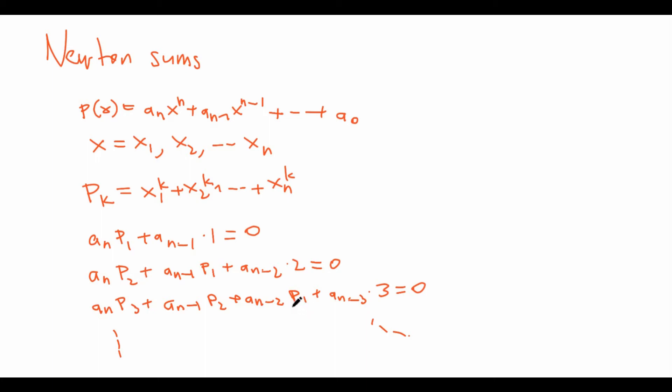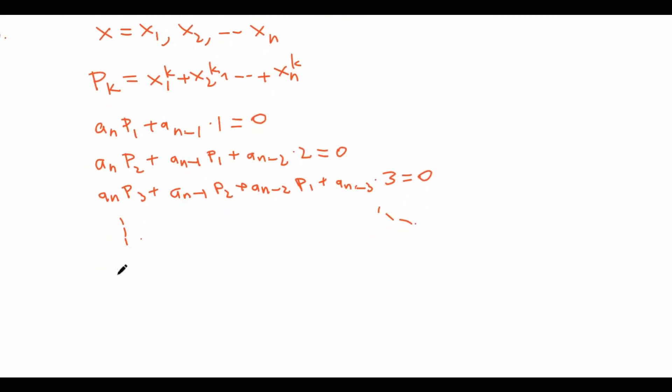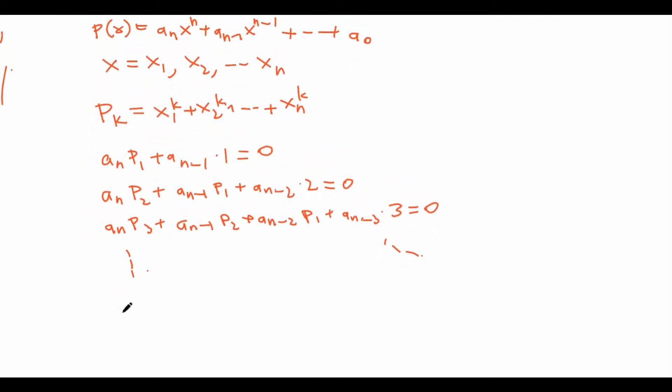So you might notice that this pattern works pretty well until we get to P_n. So now we have a_n*P_n plus a_{n-1}*P_{n-1} plus dot dot dot all the way to plus a_1*P_1 plus a_0 times n equals 0.